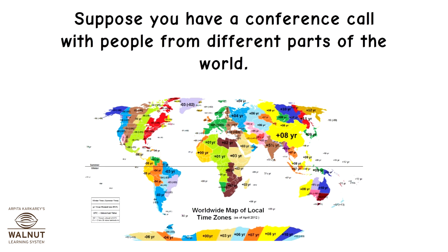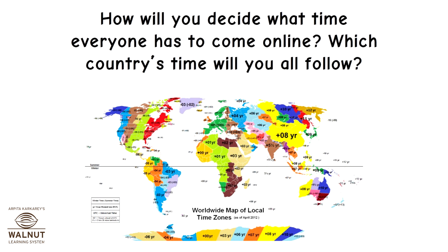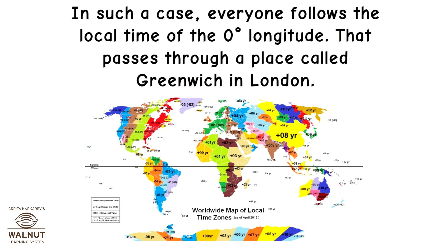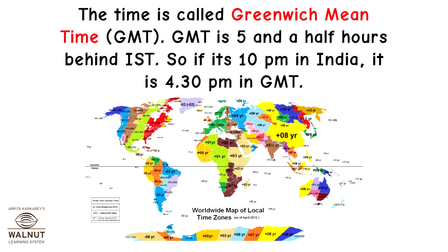Suppose you have a conference call with people from different parts of the world. How will you decide what time everyone has to come online? Which country's time will you all follow? In such a case, everyone follows the local time of the 0 degree longitude that passes through a place called Greenwich in London. This time is called Greenwich Mean Time, or GMT. GMT is 5 and a half hours behind IST, so if it's 10pm in India, it is 4:30pm in GMT.